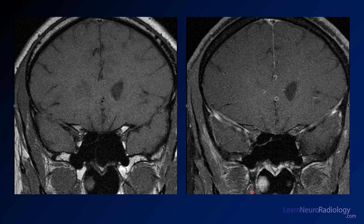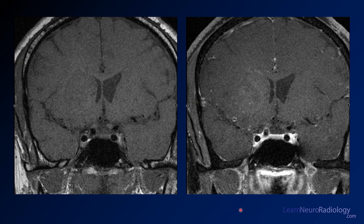Here you see an example of vessel wall imaging. On the left is a coronal pre-contrast image and on the right is the post-contrast image. Look at this vessel — you've got circumferential enhancement around the margins of the ACA, with a tram track-like appearance where another vessel is caught obliquely. This is what CNS vasculitis looks like on vessel wall imaging.